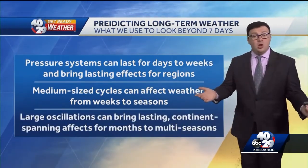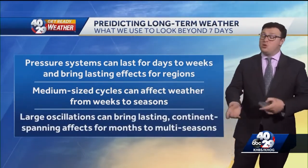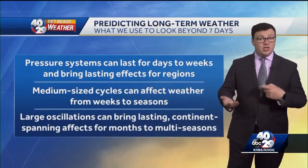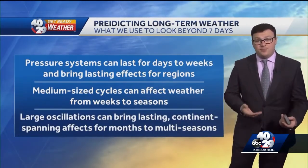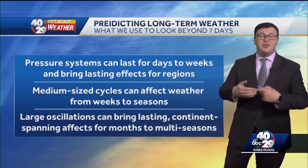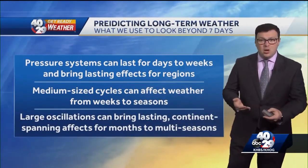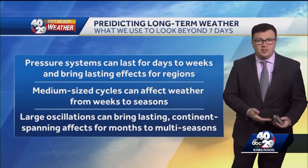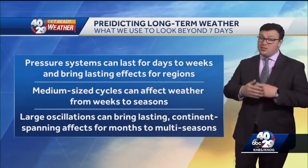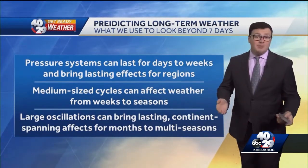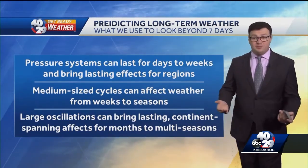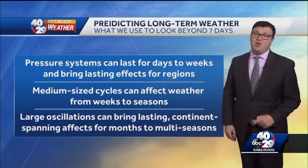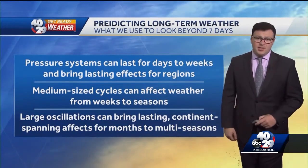Moving even larger, we have seasonal to yearly cycles like El Niño or La Niña. This is what we call the ENSO — the El Niño Southern Oscillation. This can cause long-term, hemisphere-spanning effects for seasons, if not even longer.